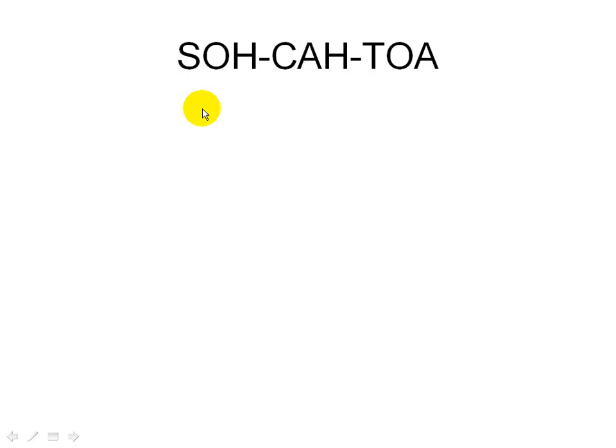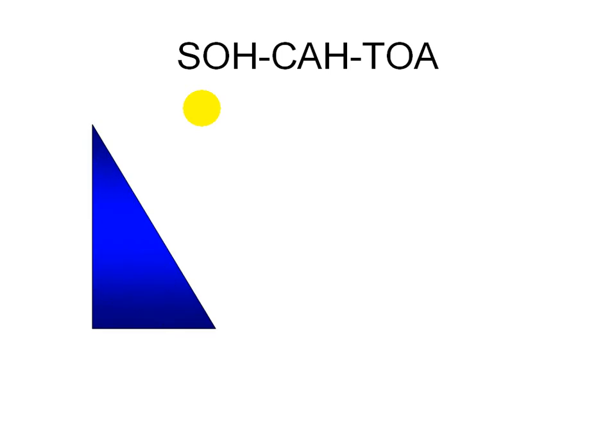Now let's look at this mnemonic called Sokotoa and see how it will help you remember the three major functions associated with trigonometry. First, we'll start off with this right triangle, where here is the 90 degrees. Associated with this triangle are the three sides and the three angles.